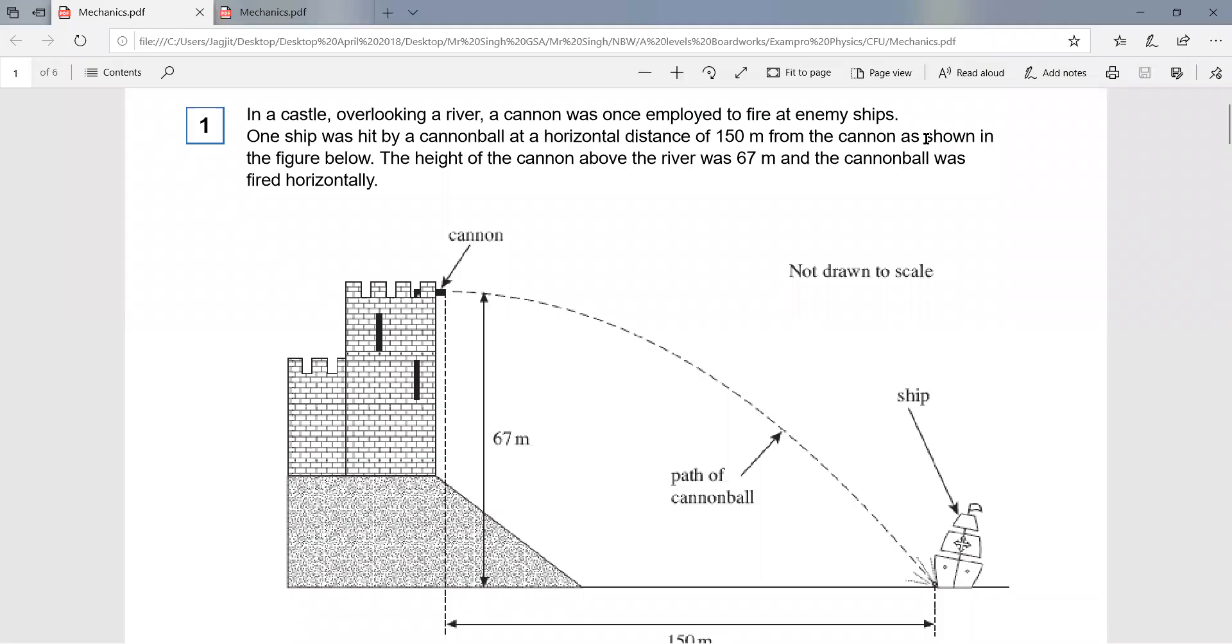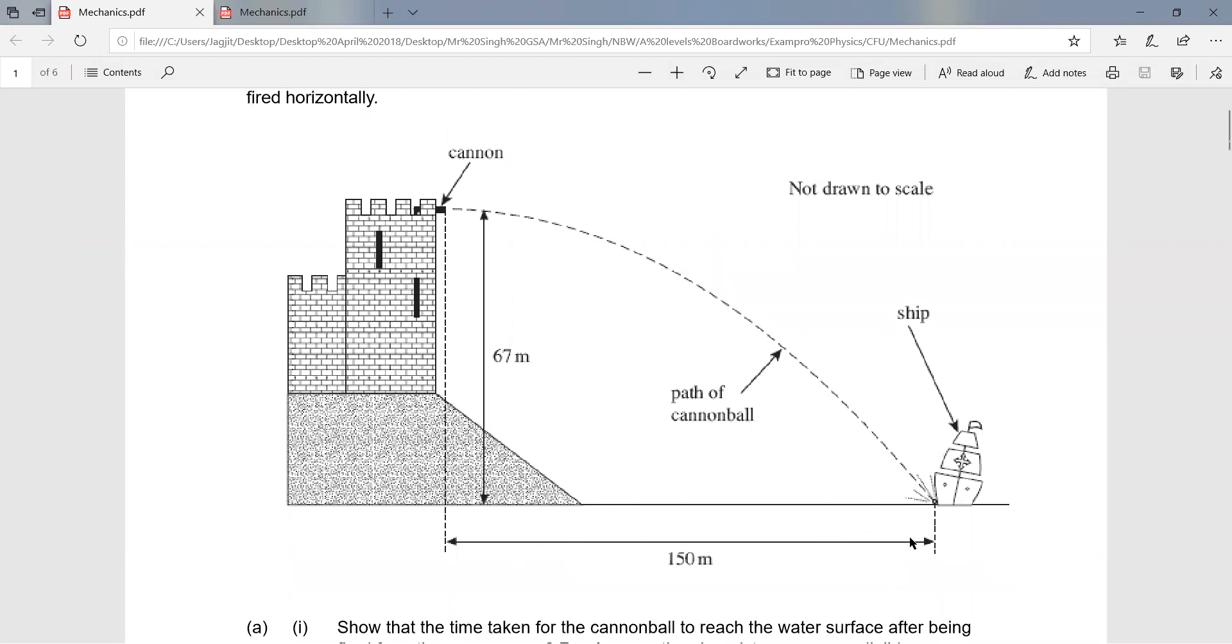Let's look at this question from mechanics, A-level physics. In a castle overlooking a river, a cannon was once employed to fire at enemy ships. One ship was hit by a cannonball at a horizontal distance of 150 meters from the cannon.